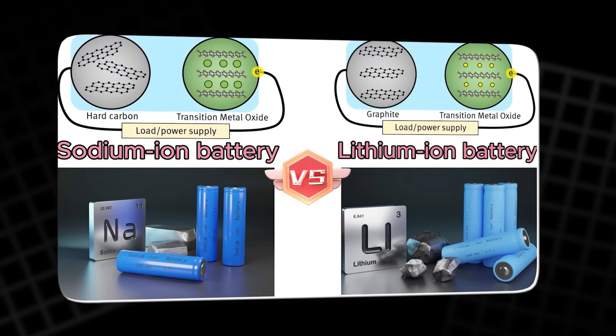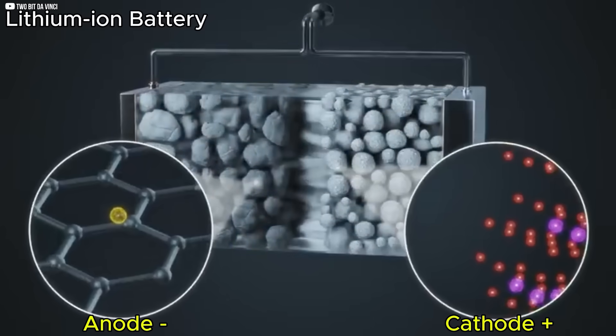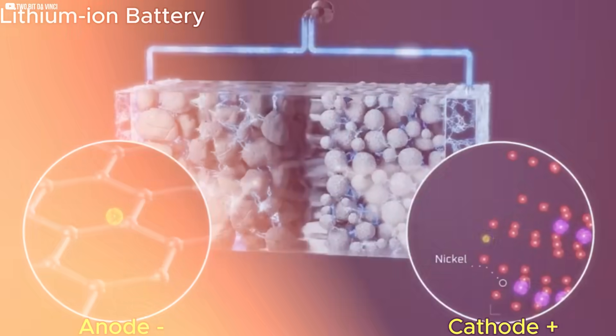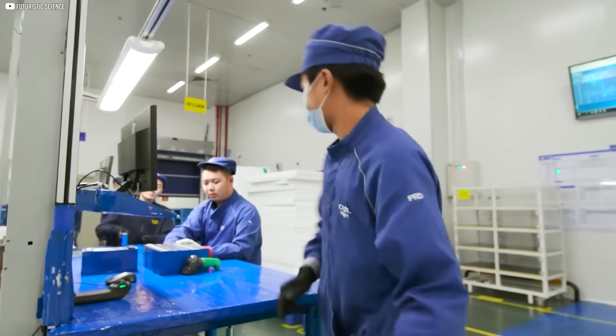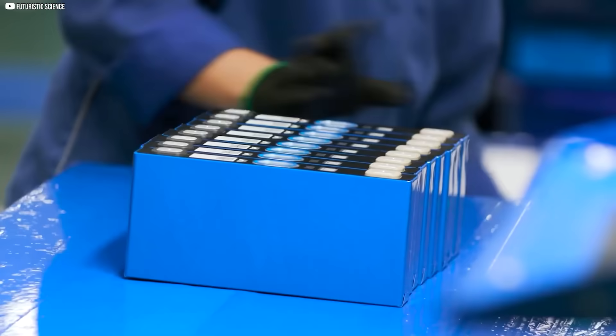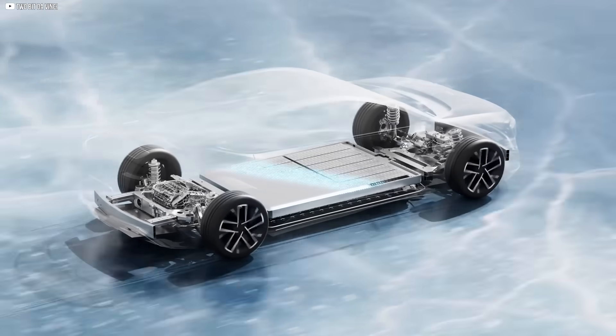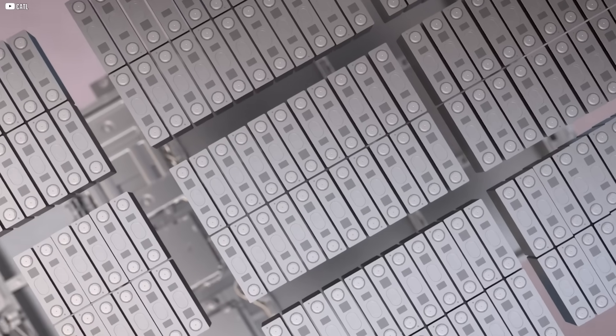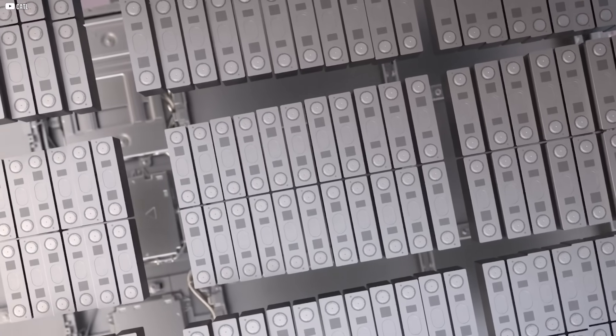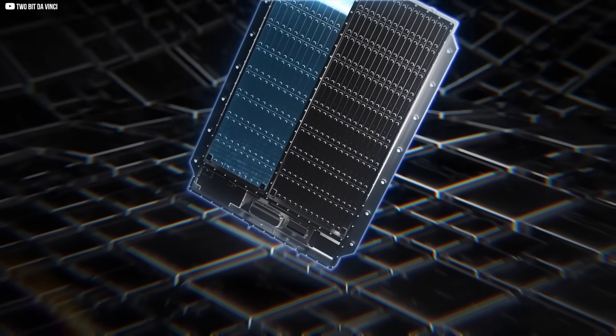Sodium ions are larger and heavier than lithium ions. This makes it harder to pack them tightly into a small battery cell. That's one reason why sodium batteries have traditionally lagged in energy density. But CATL's engineers found clever ways to work around this. They developed new electrode materials that allow sodium ions to move faster and settle more efficiently. They also redesigned the battery's internal structure, creating more space for sodium movement without making the battery physically larger.